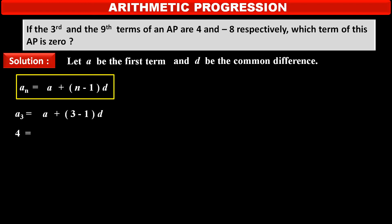But, third term is given 4. So, 4 is equal to first term A plus 3 minus 1 that is 2D. Therefore, we get the equation of two variables A and D. The equation is A plus 2D is equal to 4. Consider this as statement number 1.